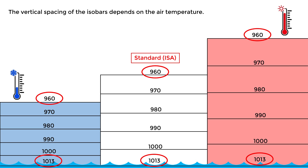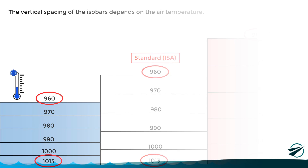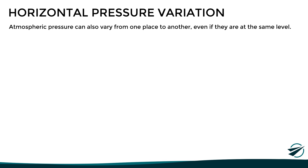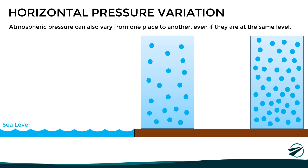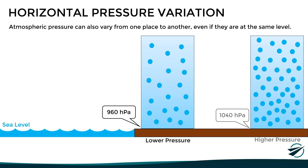So far we have focused on how pressure changes with altitude. It's now time to see how pressure changes horizontally with distance. Atmospheric pressure can also vary from one place to another even if they are at the same level or altitude. In areas where there is less air above the surface, there will be lower pressure, while areas with more air molecules above the surface will have higher pressure. The answer is once again air density — a column of air with higher density results in higher atmospheric pressure at the surface.